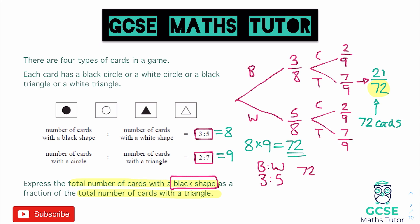So we do 72 divided by eight, which we already know is nine, and then we just multiply both of these by nine. So times them both by nine, we get 27 black shapes, and we get 45 white shapes.